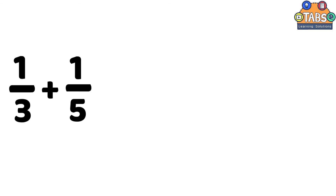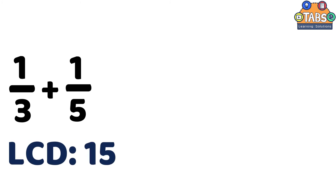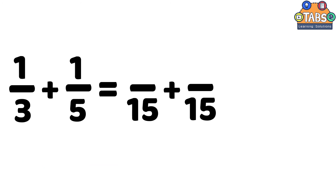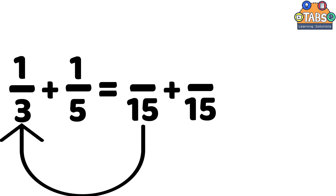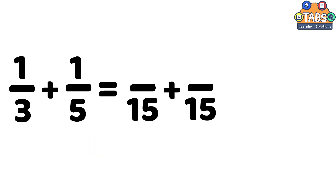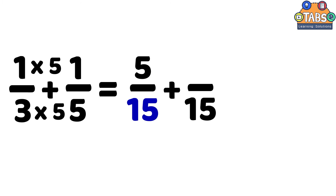Let us try another one: 1 third plus 1 fifth. Again, the denominators are different. Let us find the LCD of 3 and 5 so the denominators will be the same. The LCD is 15, so the denominator should be 15. To make 1 third have a denominator of 15, we divide 15 by 3, which equals 5. So we multiply both the numerator and denominator by 5: 1 times 5 is 5, and 3 times 5 is 15. The fraction becomes 5 over 15.